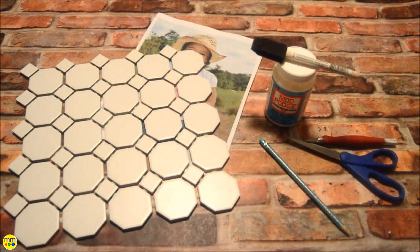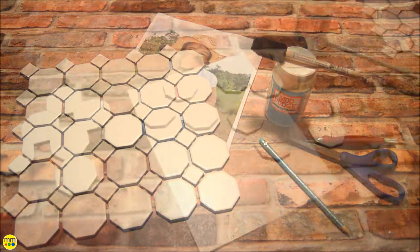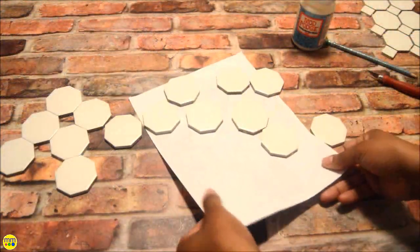For this puzzle you'll need mini tiles, a photo printed as an eight and a half by eleven, and you want to use an inkjet printer only, Mod Podge, a foam brush, an X-Acto knife or scissors, and a pencil.